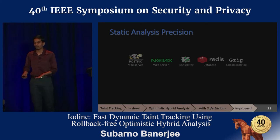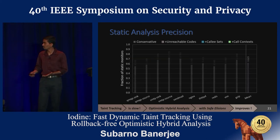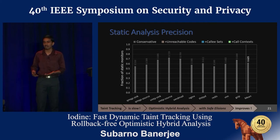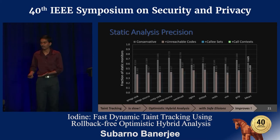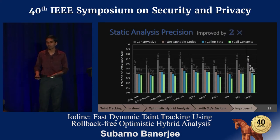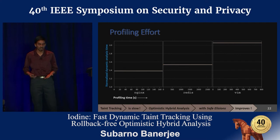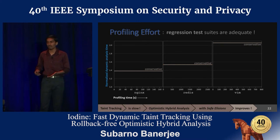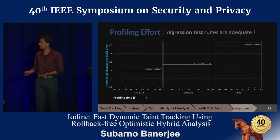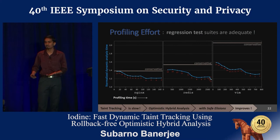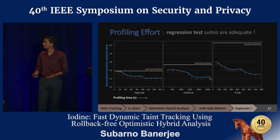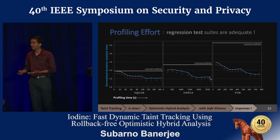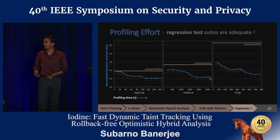We look at a few more programs using a generic policy. This graph shows the fraction of instructions that are instrumented by the conservative static analysis. After assuming the likely invariants, Iodine elides instrumenting almost half of the monitors. A key question is how much profiling is needed to see the optimistic benefits, and these graphs show how the dynamic analysis time varies with more time spent in profiling. We observe that the dynamic overheads reduce generally with more profiling.